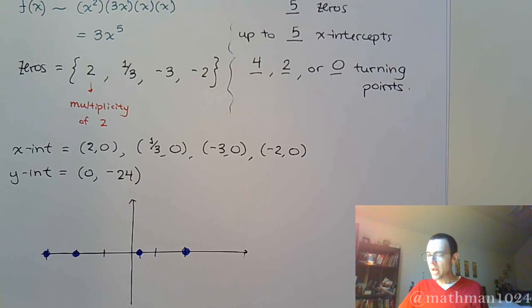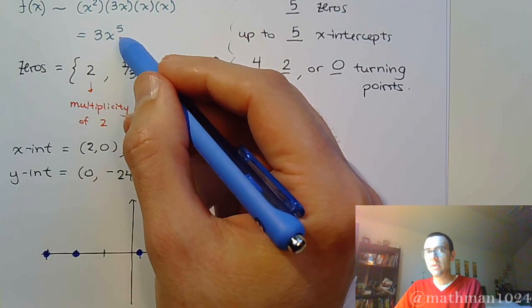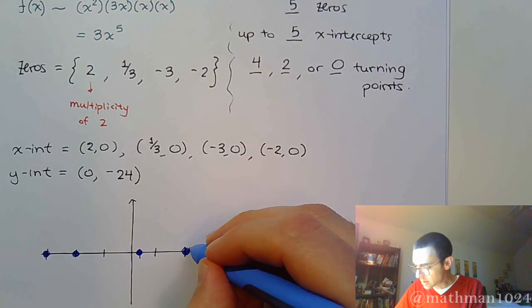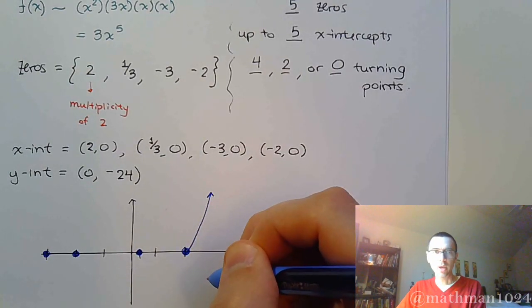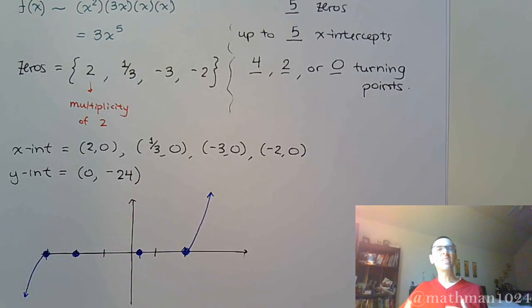So go back to this guy where it's x to the 5th so we understand what the end behavior is going to be. The end behavior tells us that on the right, we're going up, and on the left, we're going down to maintain that cactus shape.